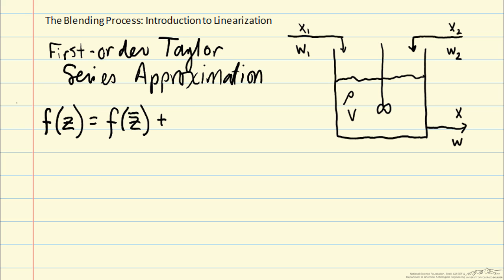Then we will add additional dependence on z by evaluating the first derivative of each element of z at z bar, which here is going to be the steady state of our process, and then multiplying that by the deviation from the steady-state value.